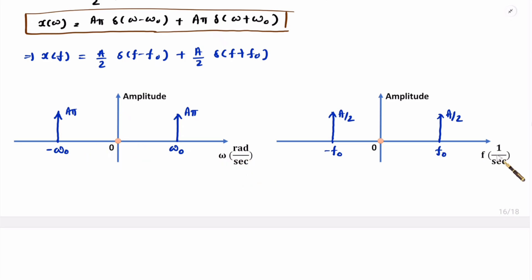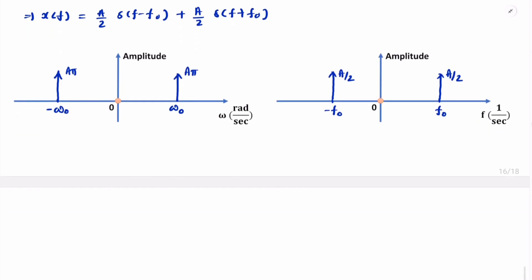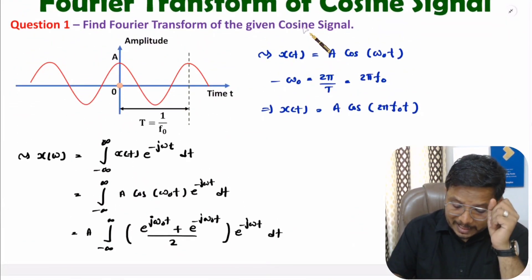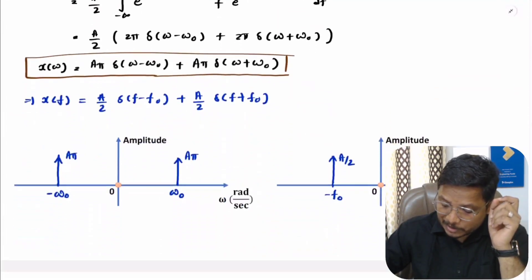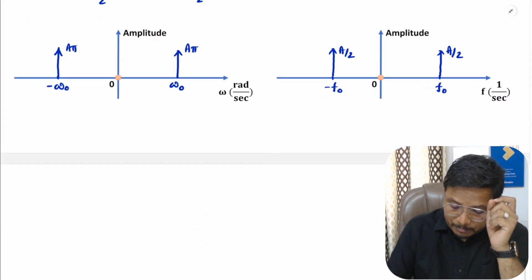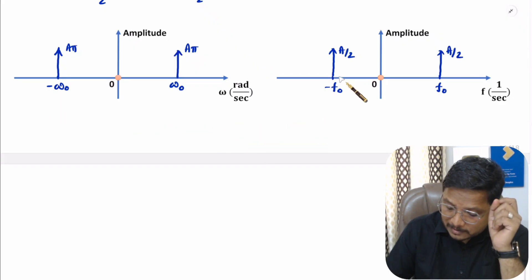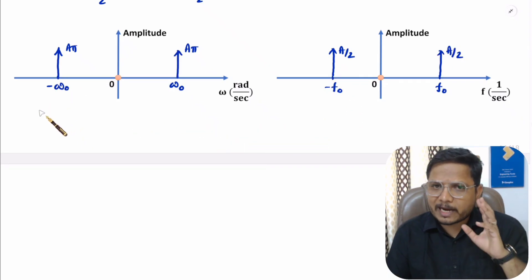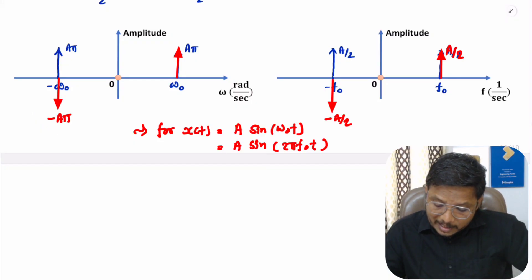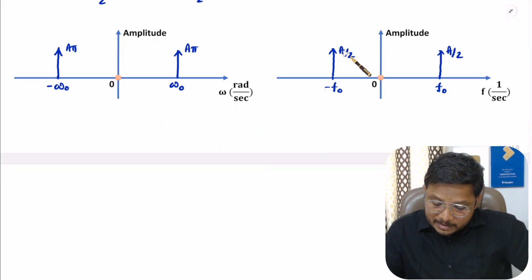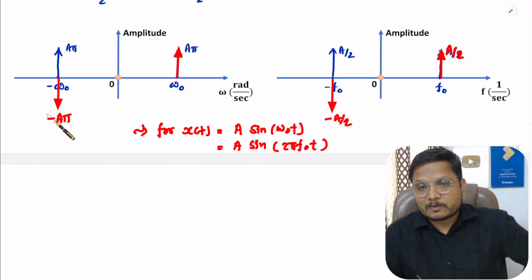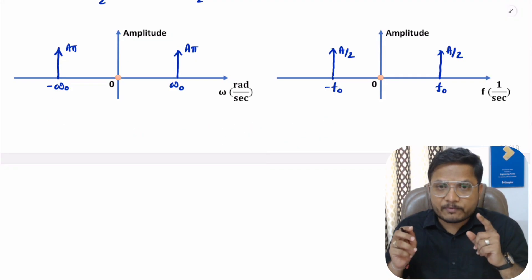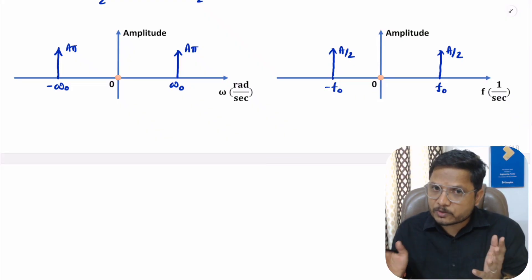Here I have explained the cosine function. If you have a sine function instead, the magnitude of the impulses remains the same, but the negative frequency impulse will have negative amplitude — opposite polarity. You can derive that yourself and you will get the same result. So that is how the sine function differs in its frequency response. Still, if you have any confusion, just place it in the comment section — I'll be happy to help. Thank you so much for watching this video.